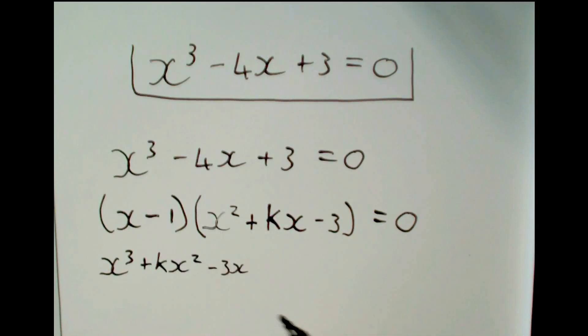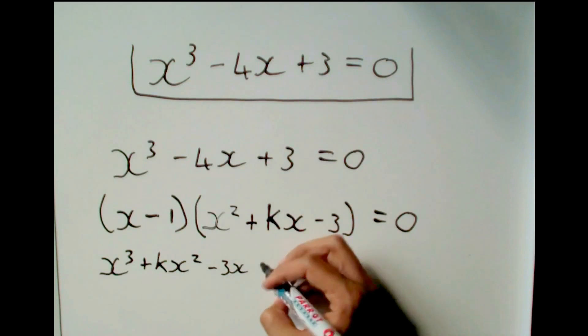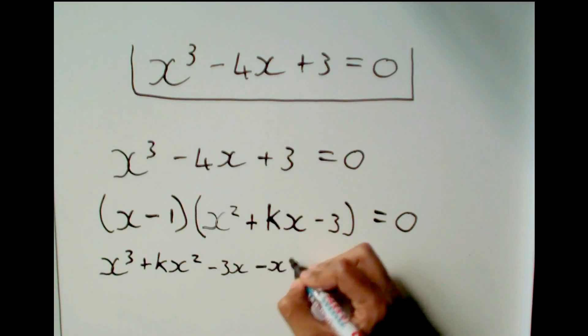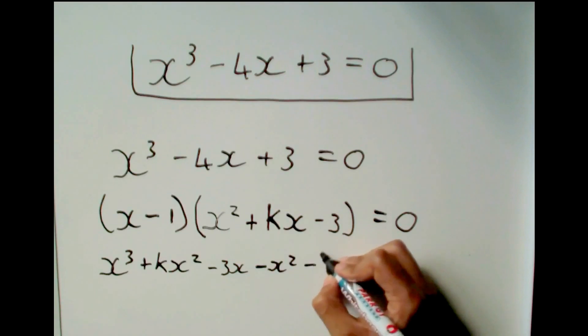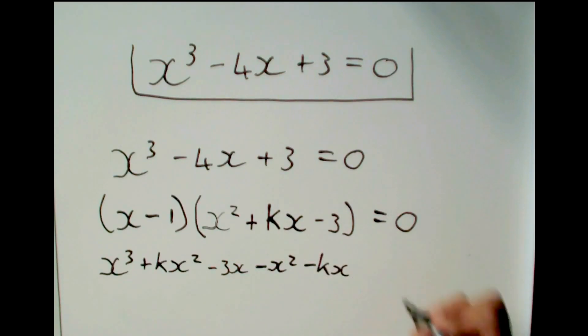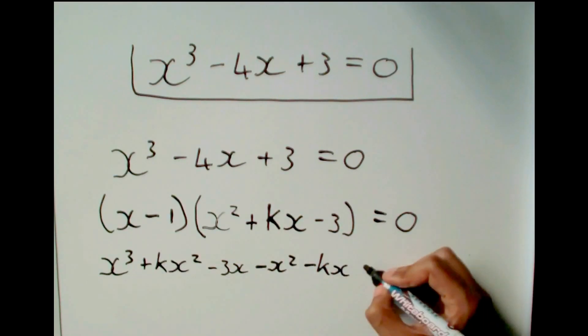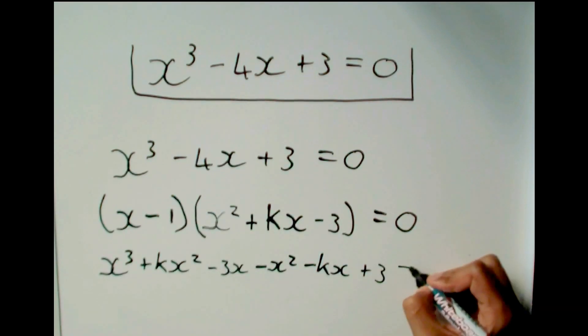Now minus 1 times x squared gives me minus x squared. Minus 1 times kx gives me minus kx. And minus 1 times minus 3 gives me plus 3, equal to zero.